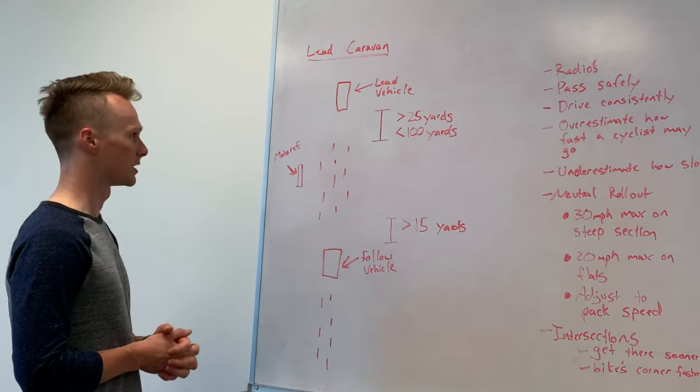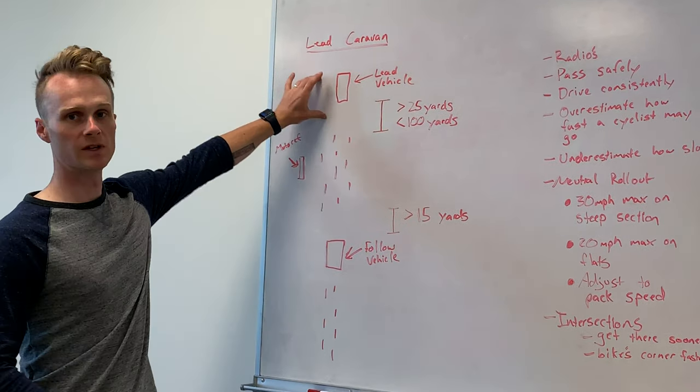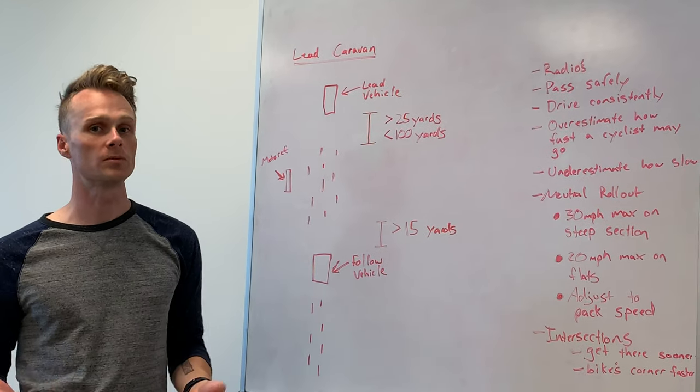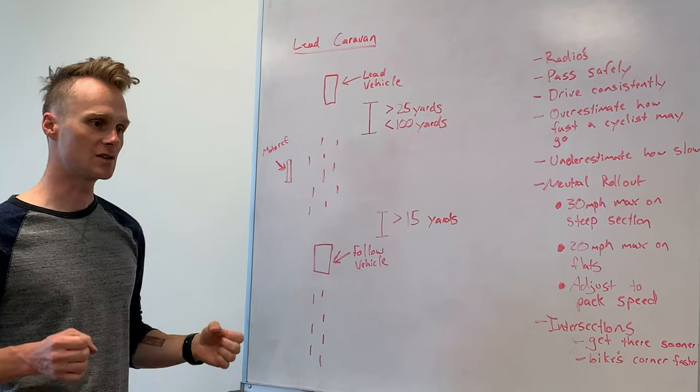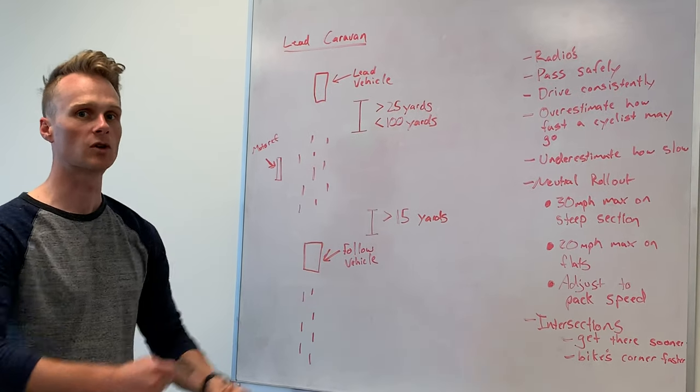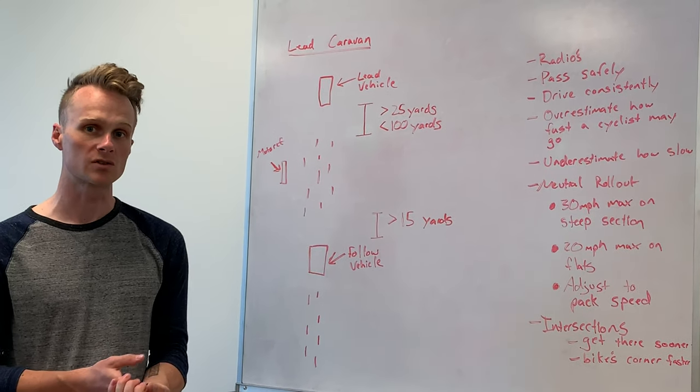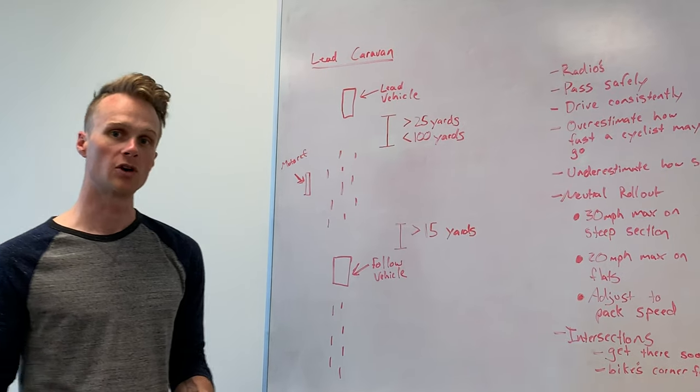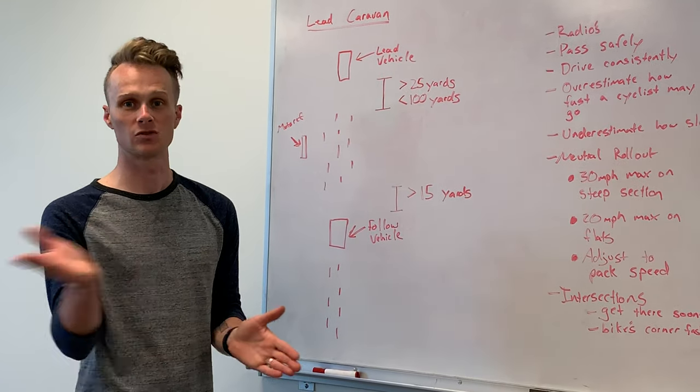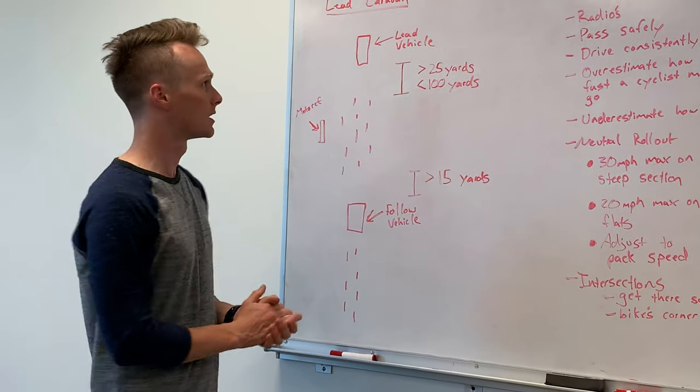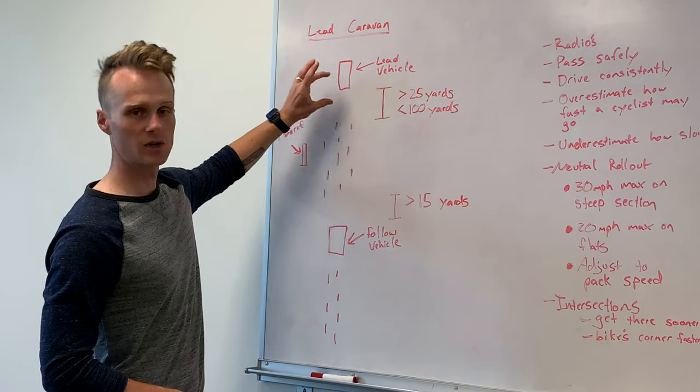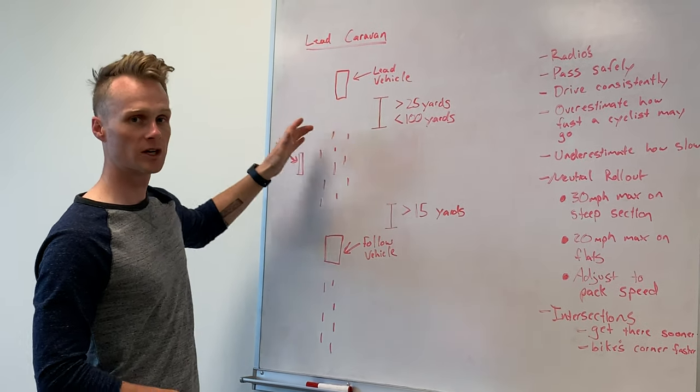A couple of things that I want to talk about. First of all, let's talk about this lead vehicle here. The lead vehicle is super important because it is charting the course for the riders. It's communicating to the riders where to go based off of its own direction. If the lead vehicle turns right, then the riders know to turn right. This distance between the lead vehicle and the field is very important.